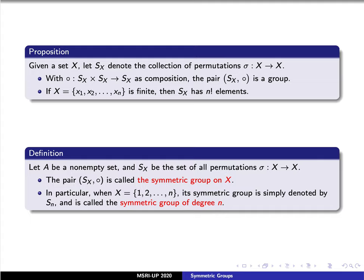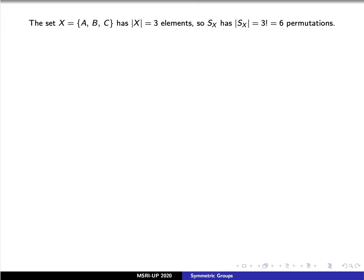Let's give an example. Let's say that our set X consists of just three elements, which we'll denote here by a, b, and c. We know from the previous proposition that S_X, the set of permutations, has three factorial, or six, elements. So there are six permutations.